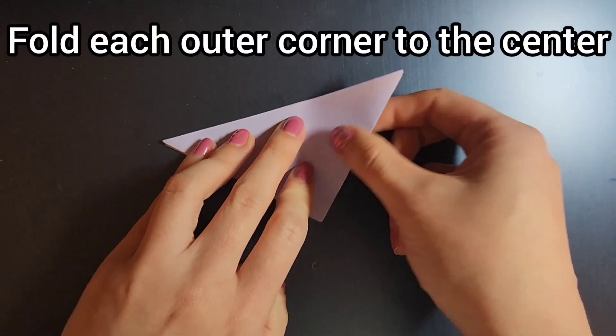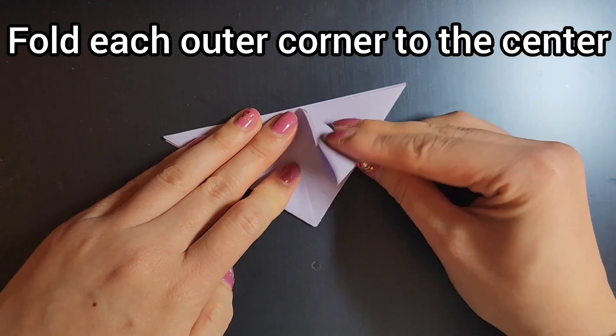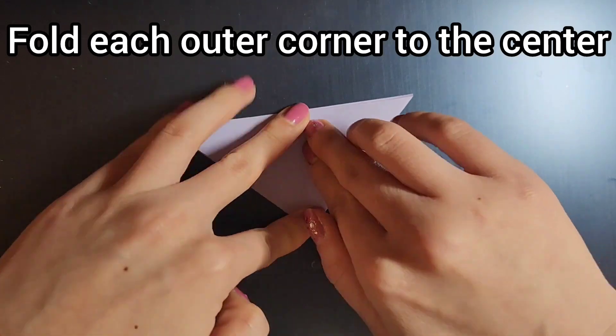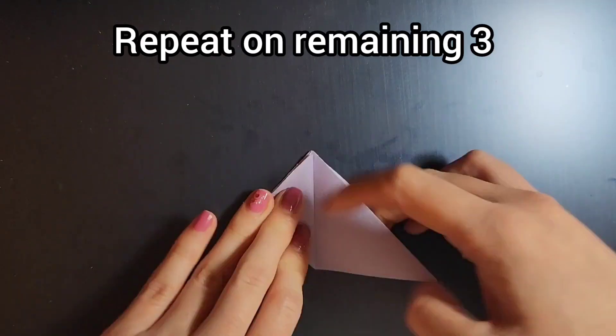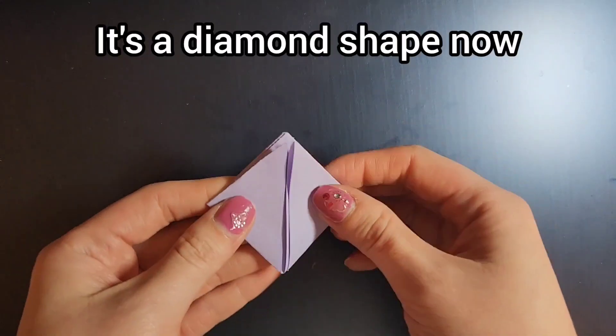Next take the outer corner and fold it in half so that it points to the center. You want to make sure it's aligned with the creases. And then repeat this with the remaining three. This should give you a diamond shape.